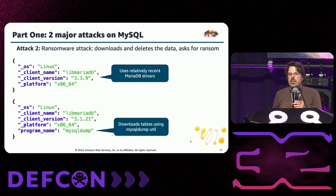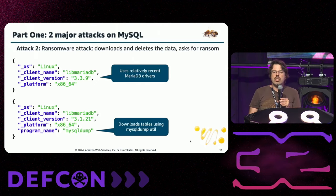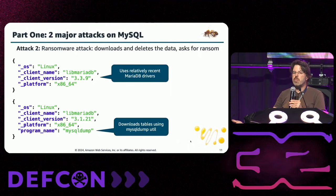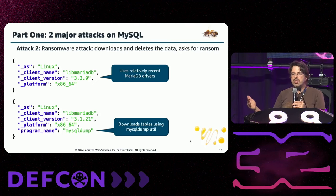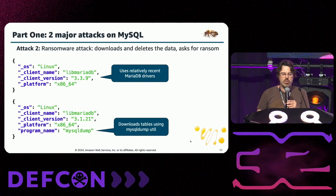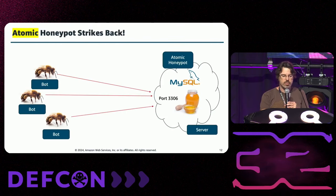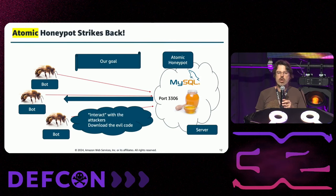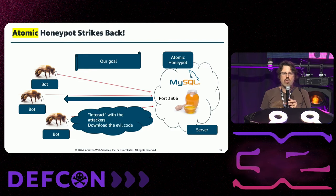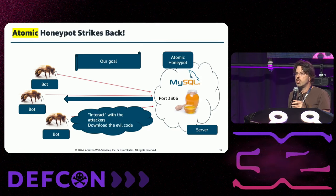The second is an even more interesting attack — it's ransomware. It tries to download your data. It basically brute-forces the password first, then connects, tries to download the data, drops the databases, and asks for ransom. We see the fingerprints: the OS version and what client the attacker is using. From there, we started an atomic version of the honeypot — a honeypot that strikes back. Our goal is to actually interact with those attacks, see what they are doing, how they do it, and potentially download the malicious code they are using.